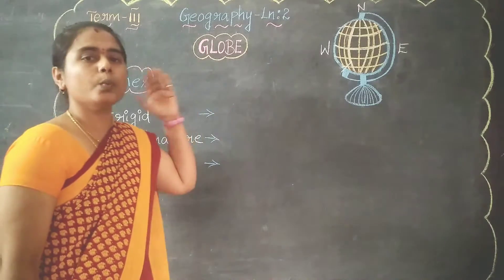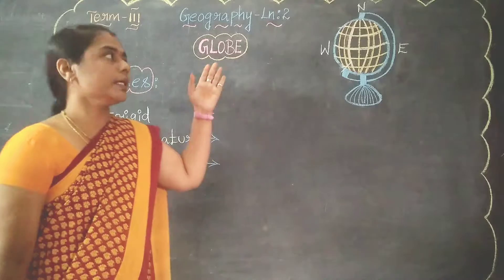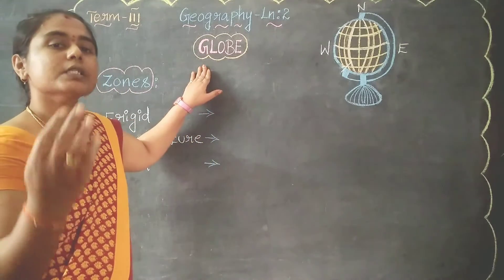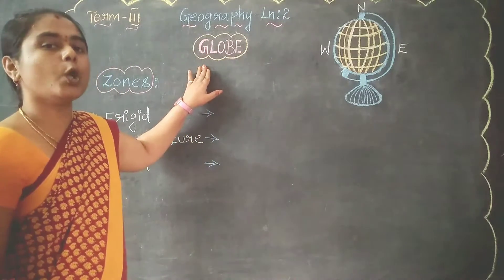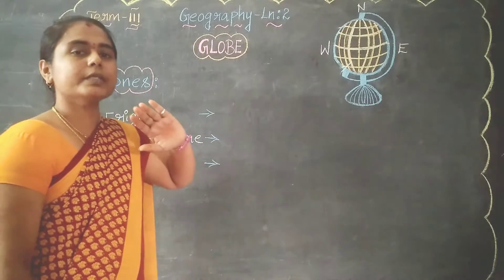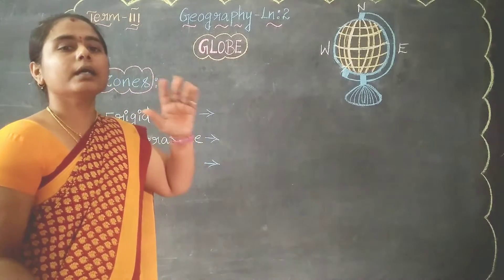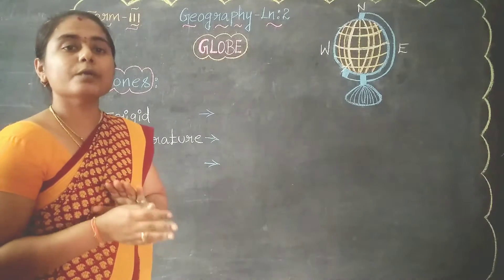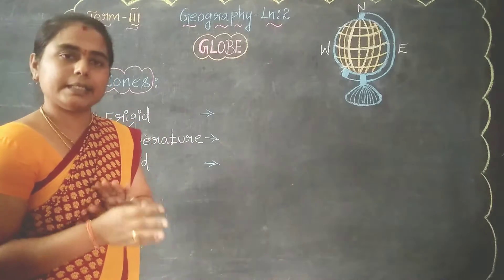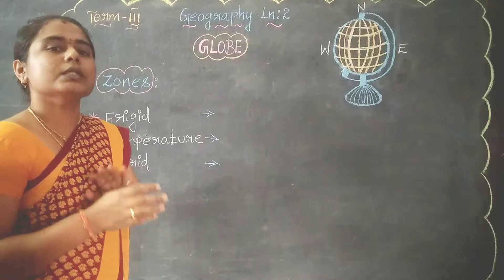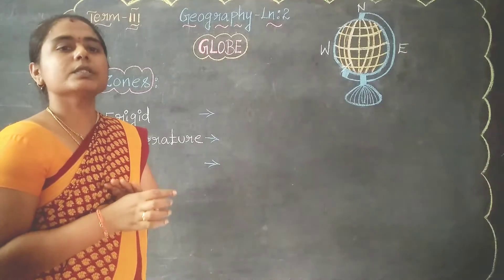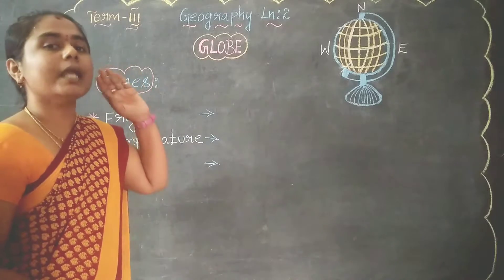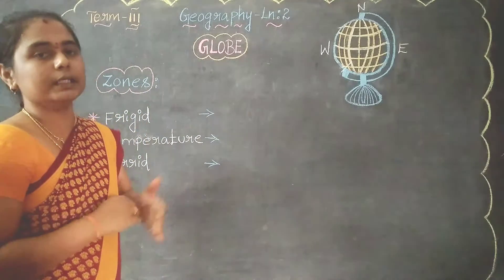Before that, what is a globe? Let's recall that. What is meant by globe? What is the difference between map and the globe? Let's recall that. What is meant by map first? A map is a visual representation of a place — it is an identical one, which is created by a person. A globe is a three-dimensional model of the earth.